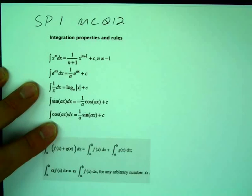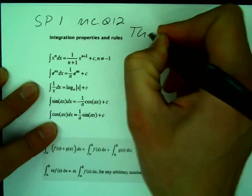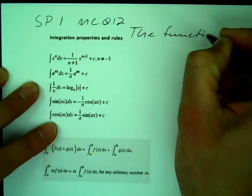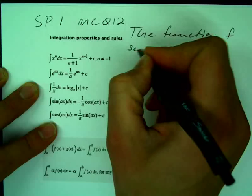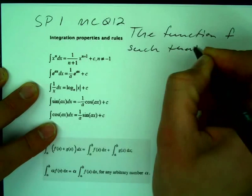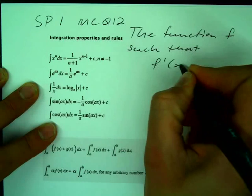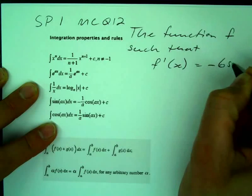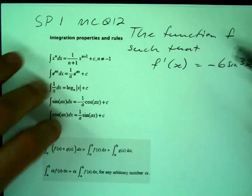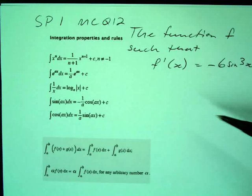Multiple choice question 12. There's a worked example, and the question says the function f such that f'(x) is equal to negative 6 sine 3x. So we want to find the function f so that its derivative is equal to that.